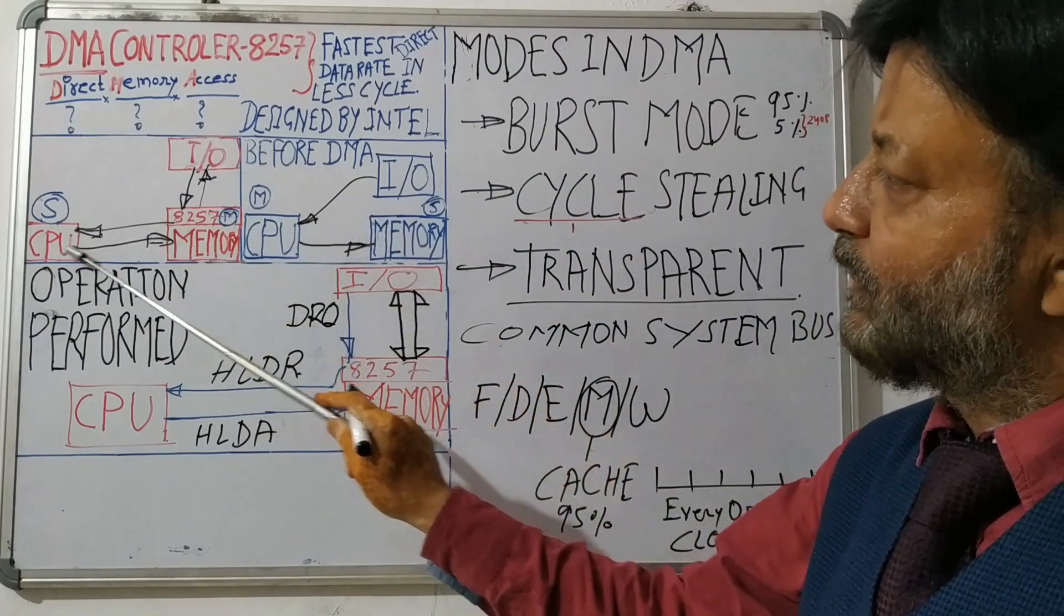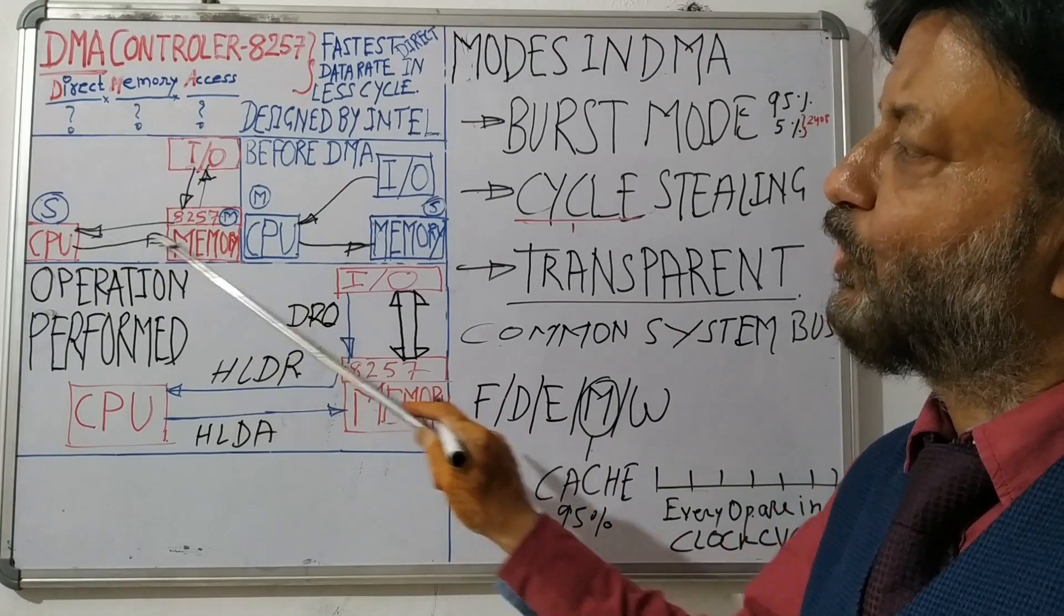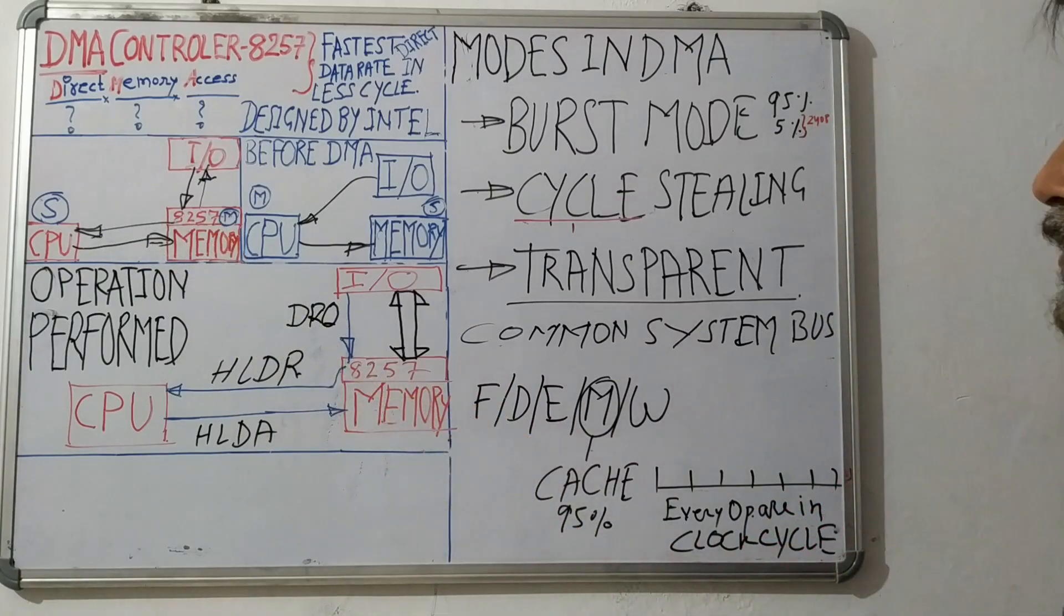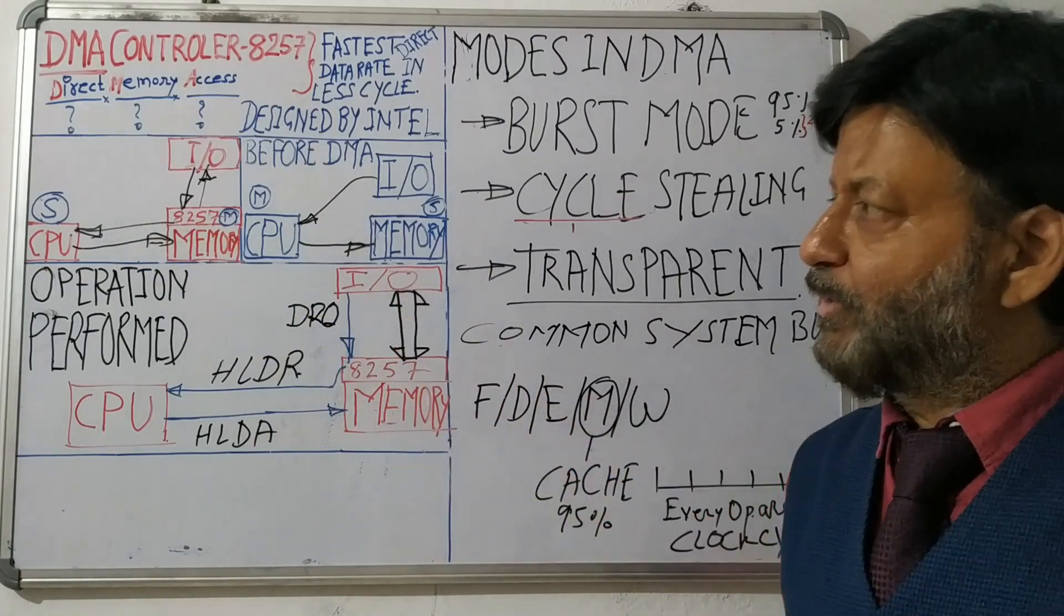That is why this cycle is part of getting the control of bus. So this is the thing with direct memory access.